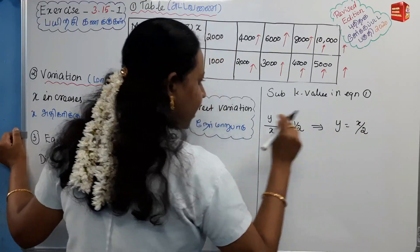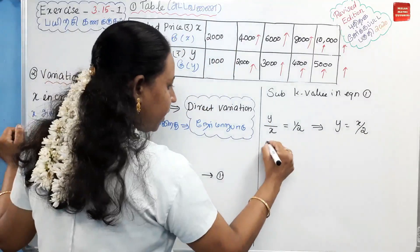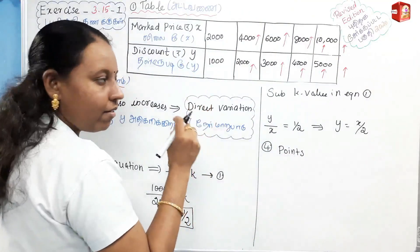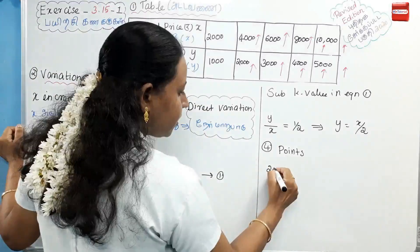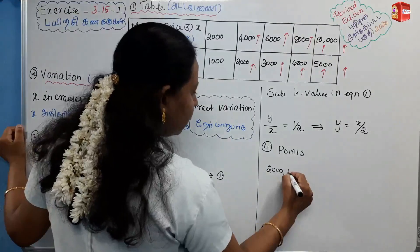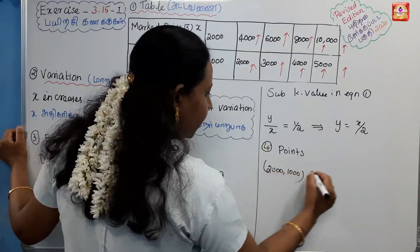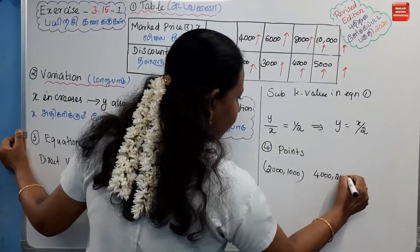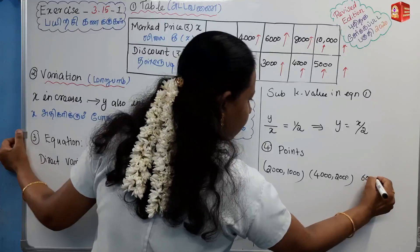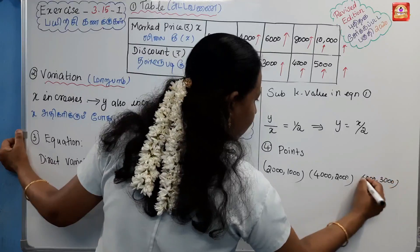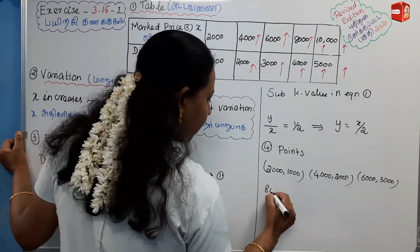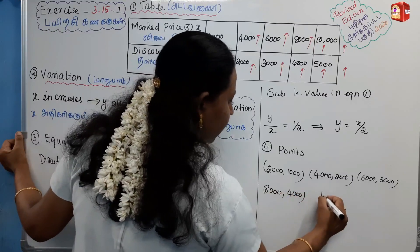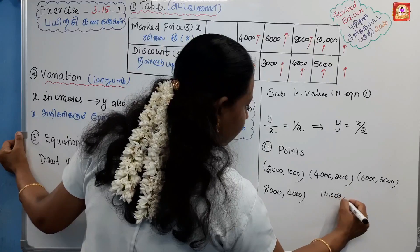Now let's list the coordinate points to plot on the graph. First point: (2000, 1000). Second point: (4000, 2000). Third point: (6000, 3000). Next point: (8000, 4000). Last point: (10000, 5000).